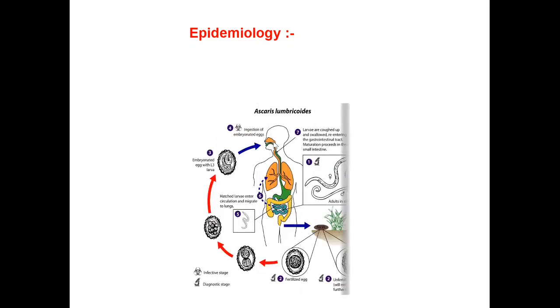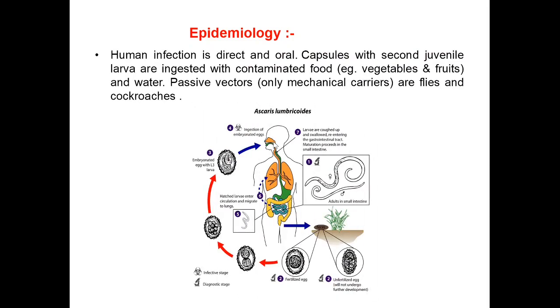Epidemiology means the study of the cause and control of disease. Human infection is direct and oral in this case. Capsules with second juvenile larvae are ingested with contaminated food such as vegetables, fruits, and water. Passive vectors, which are only mechanical carriers of the pathogen, are flies and cockroaches.